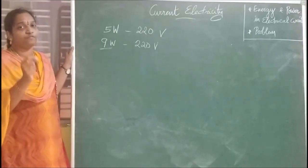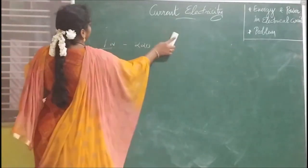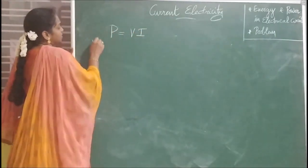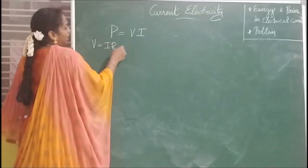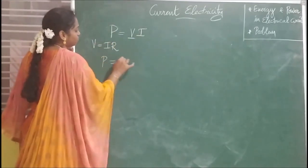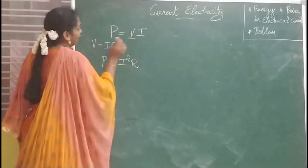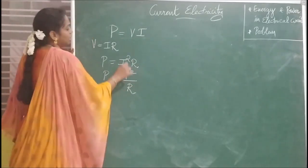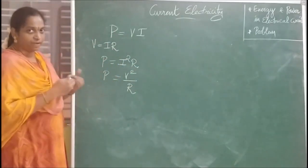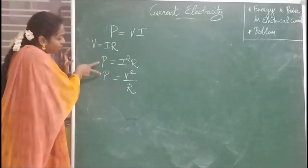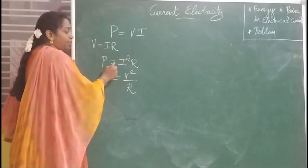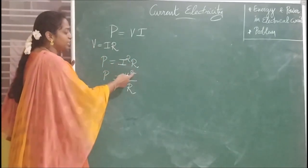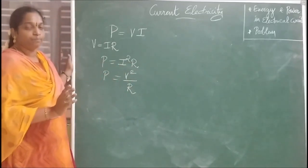Now we are going to find different forms of the power relationship. We already have P = VI. Using Ohm's law V = IR, we can substitute to get P = I²R. Alternatively, substituting I = V/R gives P = V²/R. From the equation P = I²R, power is directly proportional to the square of current — if current is doubled, power increases by four times.